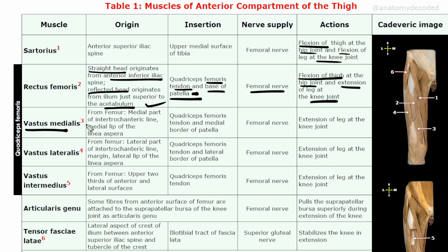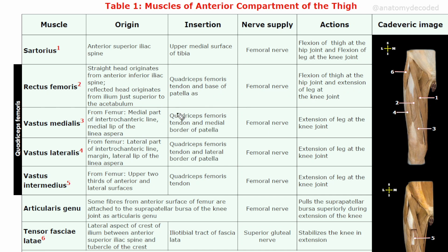Vastus medialis arises from the medial part of the intertrochanteric line as well as the medial lip of linea aspera on the posterior aspect of the femur. Insertion is via the quadriceps femoris tendon to the medial border of the patella, with an extensive attachment there. Nerve supply is the femoral nerve. Action is extension of the leg at the knee joint.